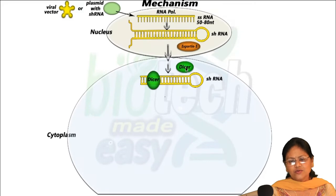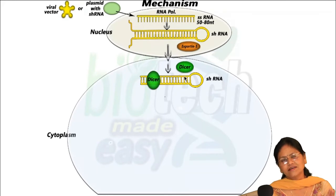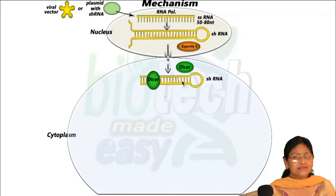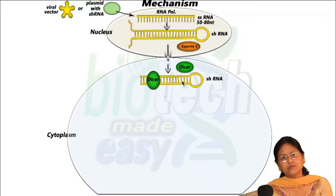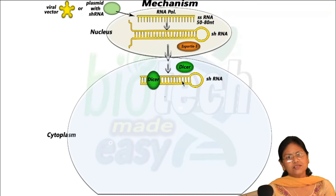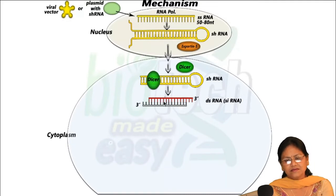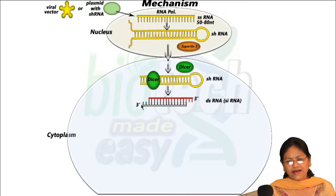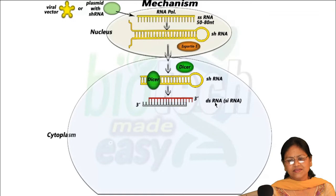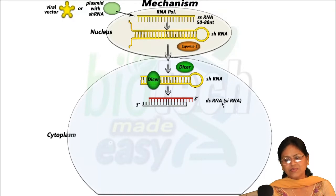Once it is in the cytoplasm, dicer molecules are present there and they attack on it. The shRNA encounters the dicer enzyme. Dicer belongs to the RNase III family and can act upon double-stranded RNA. Dicer slices the shRNA and forms a molecule having a two-nucleotide overhang at the 3' ends on both sides. This double-stranded RNA resembles siRNA.